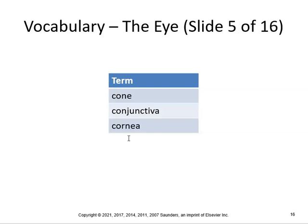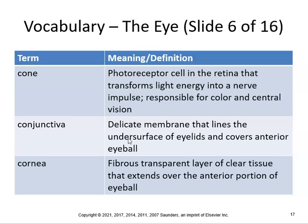Cone, conjunctiva, and cornea. A cone is a photoreceptor cell in the retina that transforms light energy into a nerve impulse, responsible for color — I just remember CC: cone and color. Conjunctiva is a delicate membrane that lines the undersurface of the eyelids and covers the anterior eyeballs. Conjunctivitis, which is basically pink eye, is when you get infection of that conjunctiva. The cornea is a fibrous transparent layer of clear tissue that extends over the anterior portion of the eyeball — where you put your contact lenses is on the cornea.